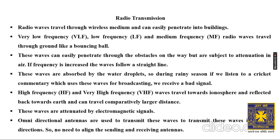To summarize radio transmission: there are mainly five variations of radio waves. The first three — VLF, LF, and MF — travel like a bouncing ball, penetrate obstacles, are subject to attenuation in air, and are absorbed by water droplets. HF and VHF travel toward the ionosphere, reflect back, cover a larger distance, and are attenuated by electromagnetic signals. Omnidirectional antennas are used, capable of transmitting and receiving from all directions. Bluetooth devices also use radio signals.